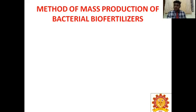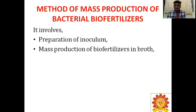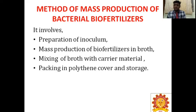Next is mass production. Mass production means producing a large number of biofertilizers for farmer use. The method of mass production of bacterial biofertilizers involves: preparation of inoculum, mass production of biofertilizers in broth, mixing of broth with carrier material, packing in polythene covers, and storage. The suitable media are: for Rhizobium — YEM medium; for Azospirillum — NFB medium; for Gluconacetobacter — LGI medium; for Azotobacter — Waksman's medium number 77; for PPFM — AMS (ammonium mineral salt) medium; for PGPR such as Pseudomonas — King's B medium.